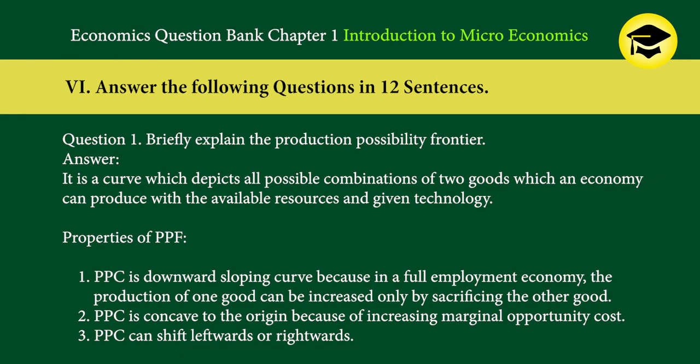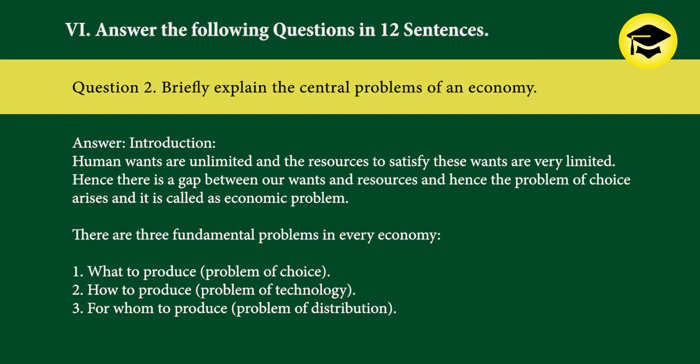Answer the following questions in 12 sentences. Question 1: Briefly explain the production possibility frontier. Answer: It is a curve which depicts all possible combinations of two goods which an economy can produce with the available resources and given technology. Properties of PPF: PPC is a downward sloping curve because in a full employment economy, the production of one good can be increased only by sacrificing the other. PPC is concave to the origin because of increasing marginal opportunity cost. PPC can shift leftwards or rightwards.